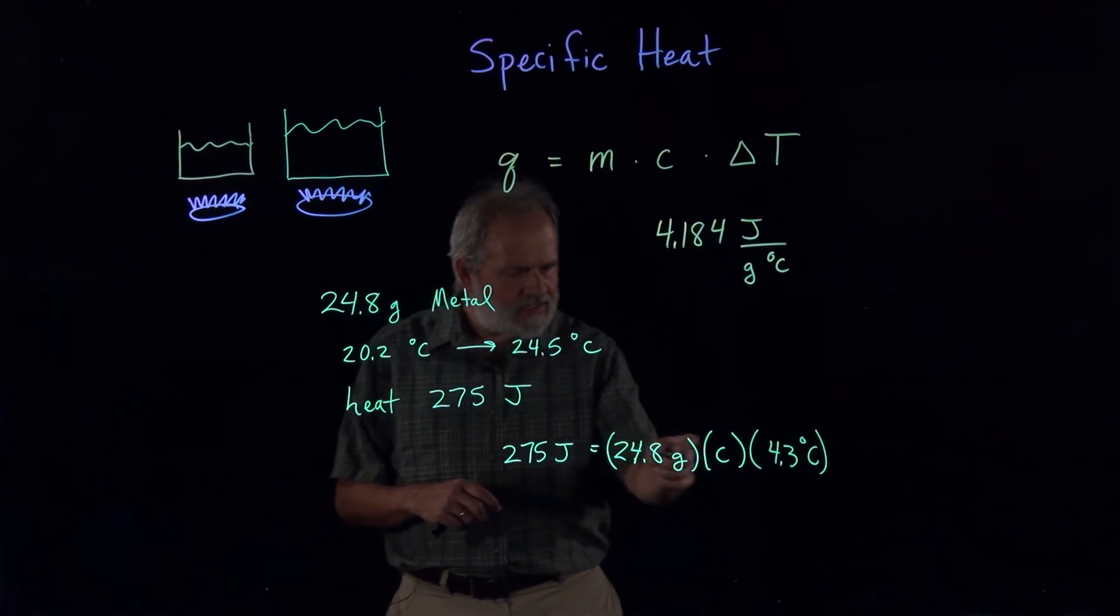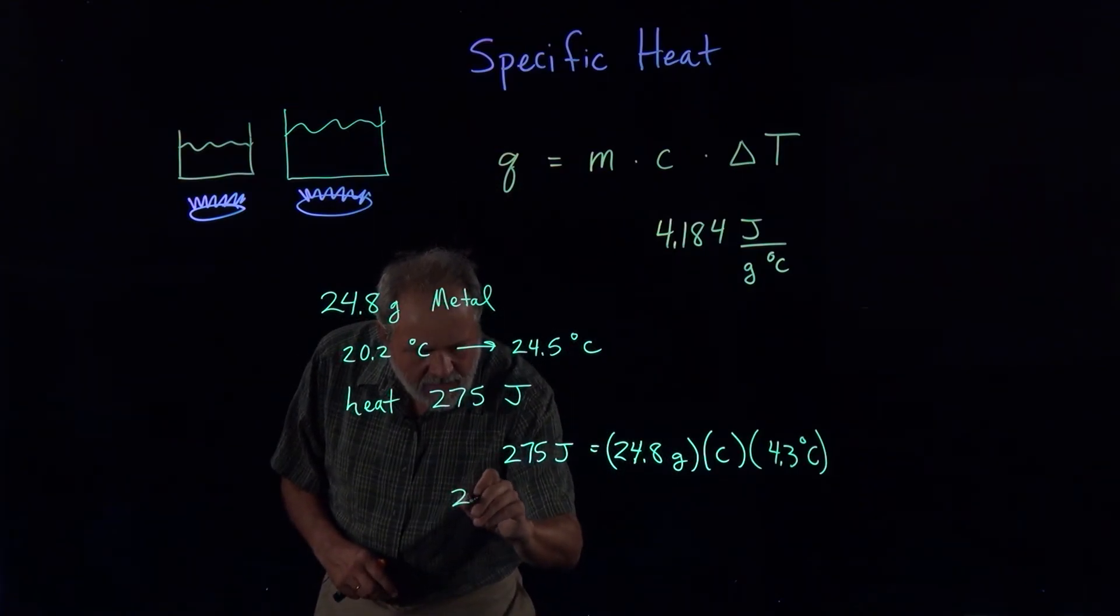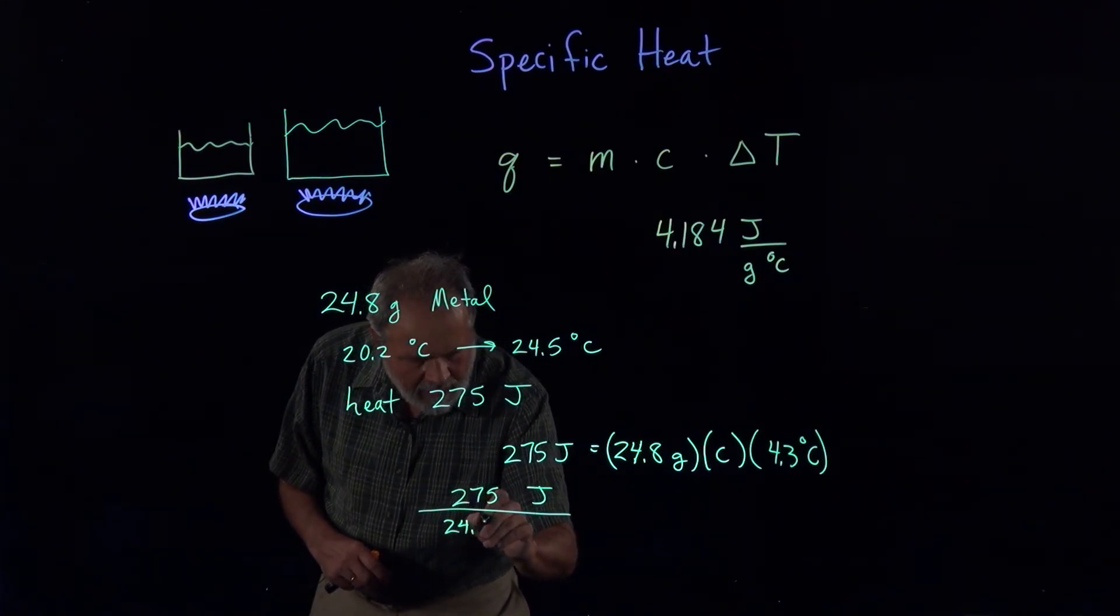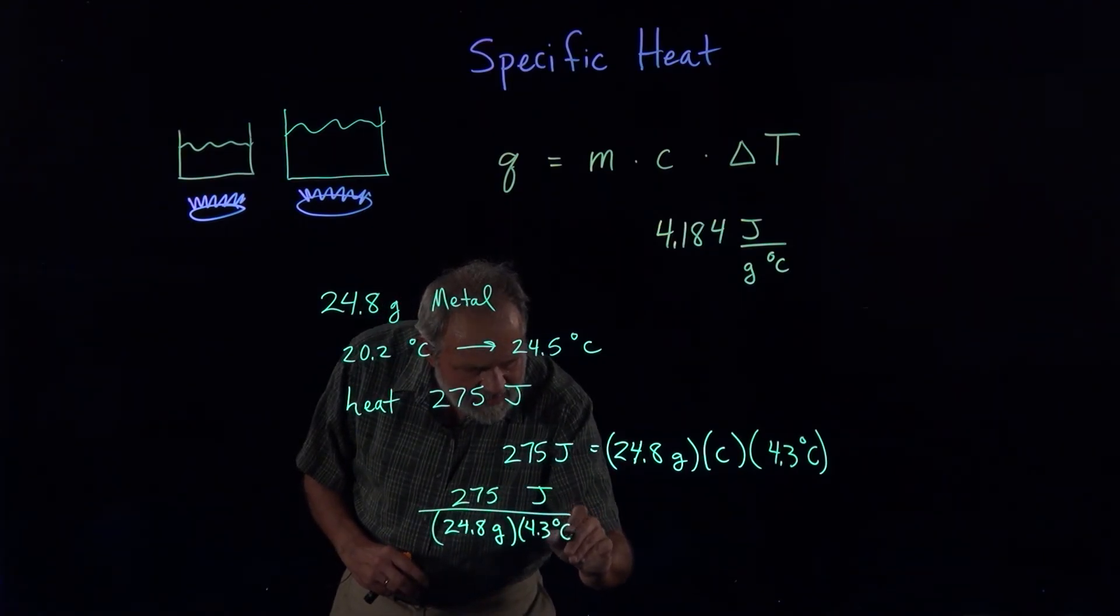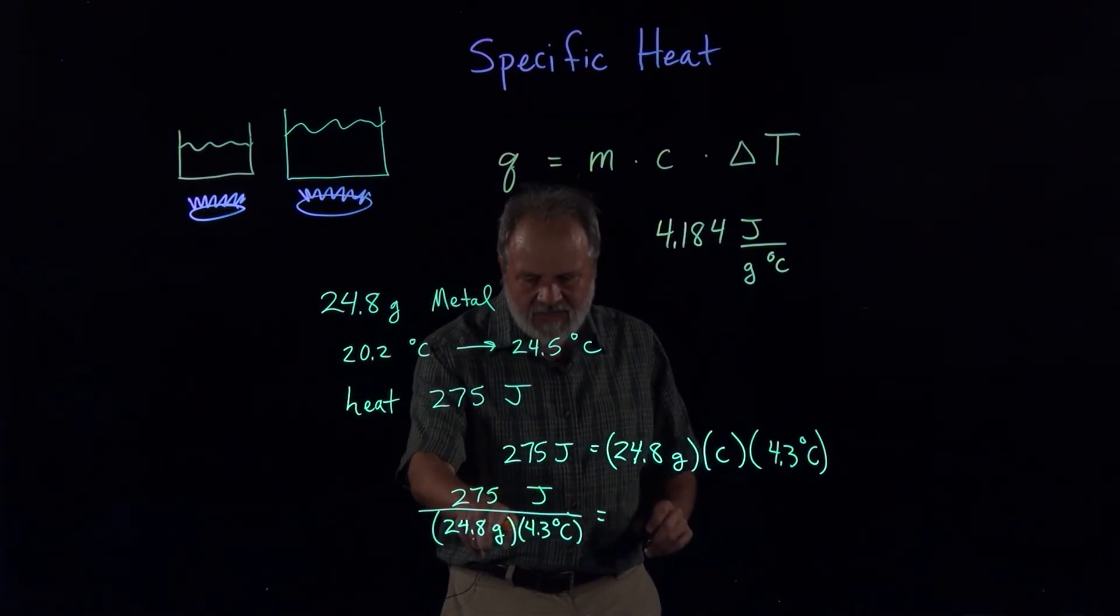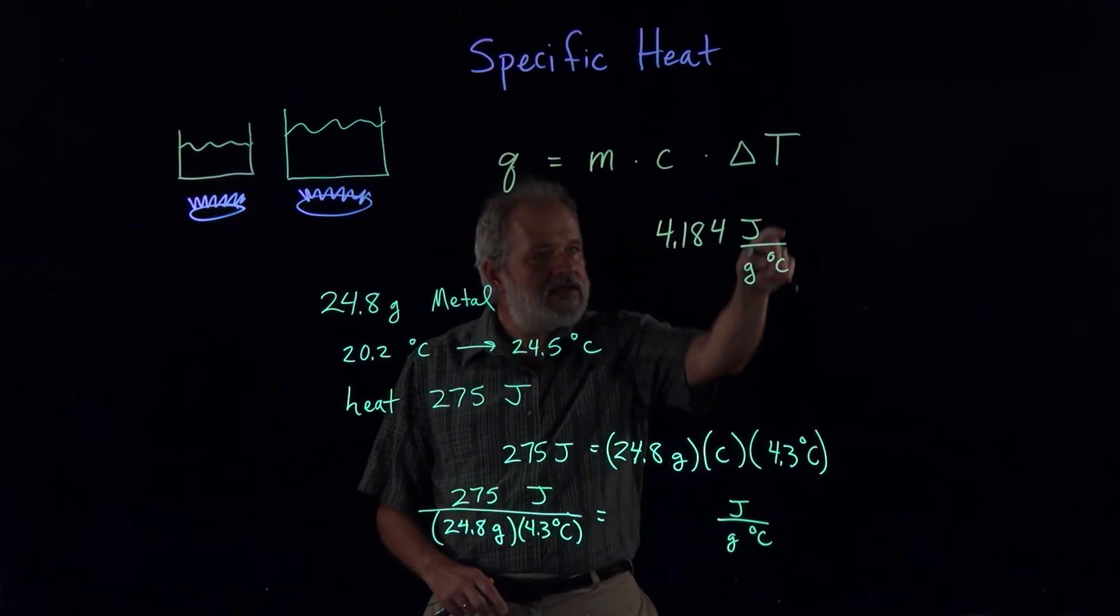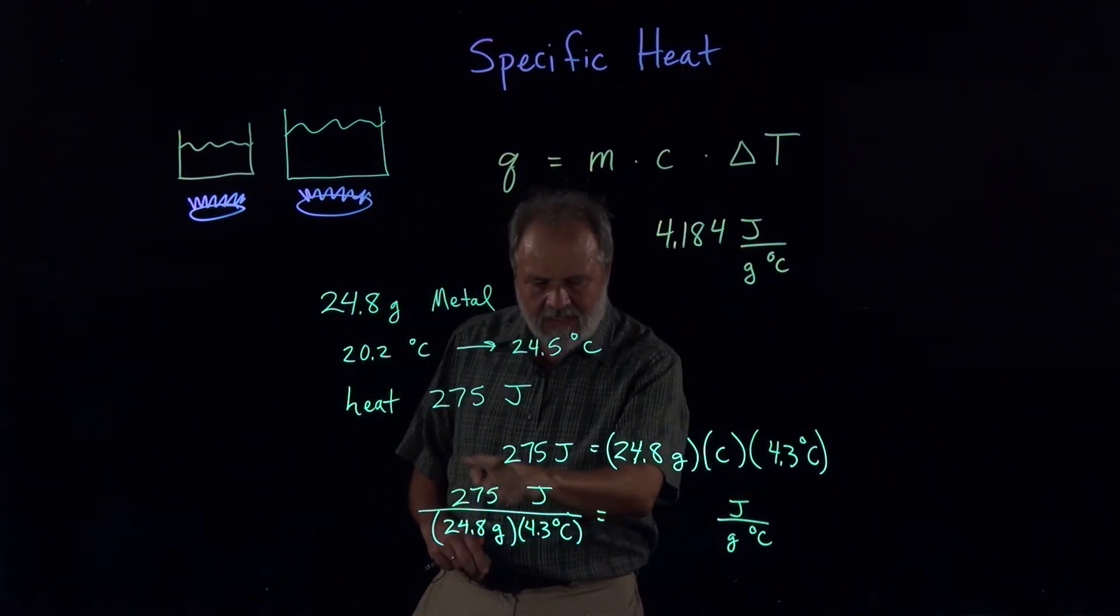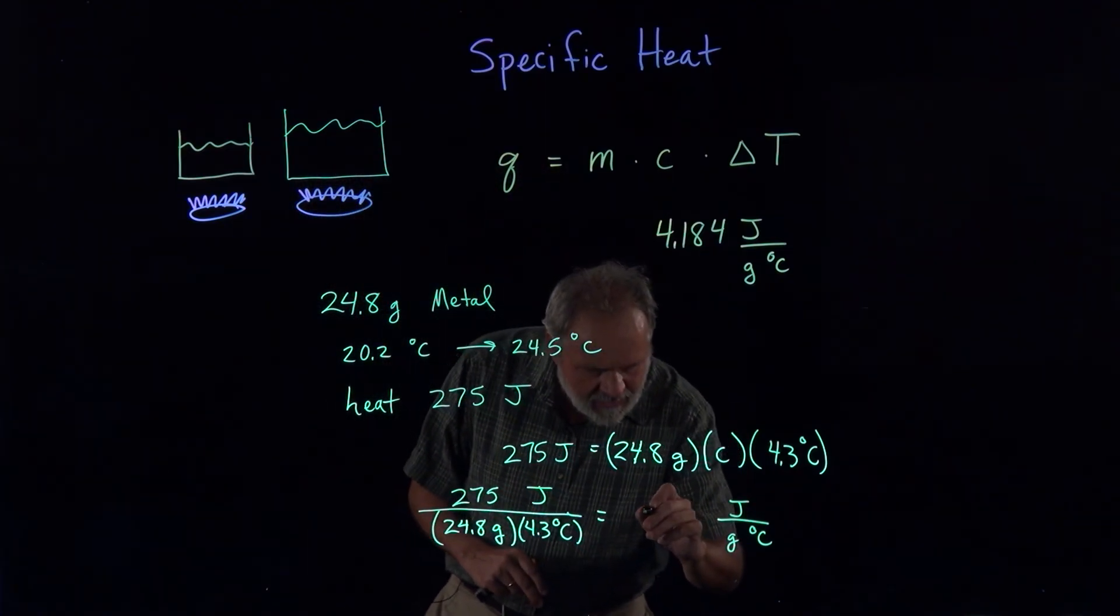So now we just solve for C by dividing both sides by the 24.8 grams and the 4.3 degrees C. And so, 275 joules divided by 24.8 grams and 4.3 degrees C. First of all, let's just look at the units we're going to get, we're going to get joules divided by grams and degrees C, which is the units of specific heat, so we know we're good here. Now we just need to put in the numbers in our calculator, and if I have done this before this lecture correctly, it is 2.6.